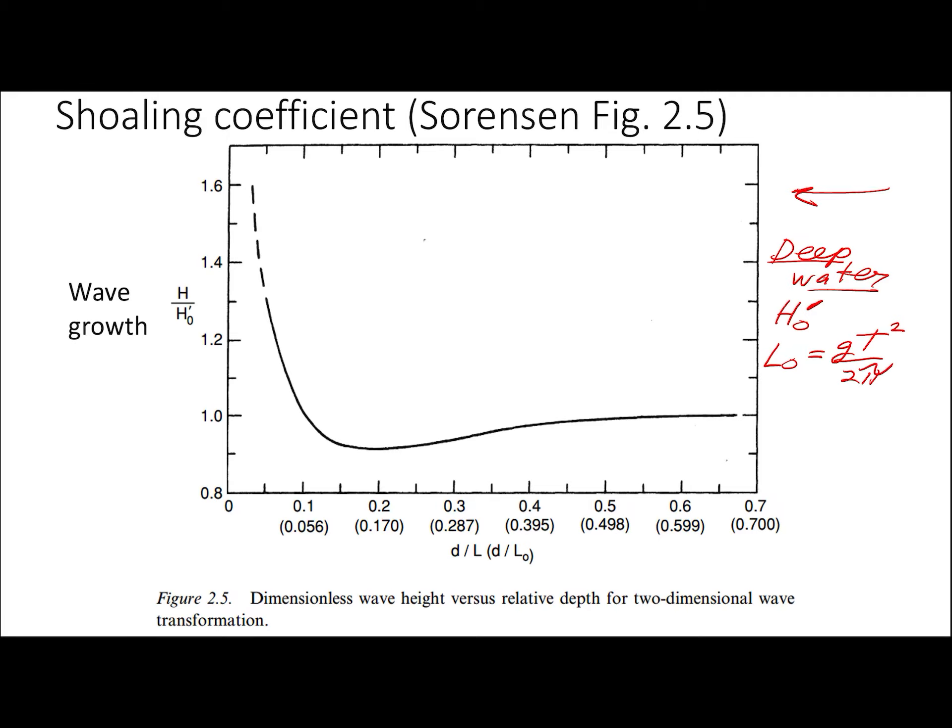L naught is GT squared over 2π. That is simply the deep water wavelength for a wave that has a period T, regardless of where the wave is. If it's a deep water wave, that's the wavelength it'll have in deep water if it has a period T.